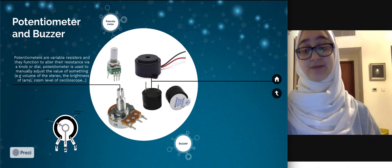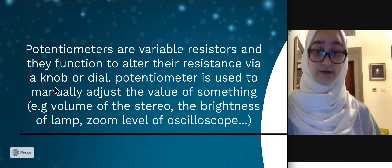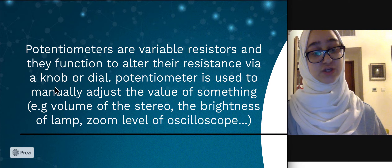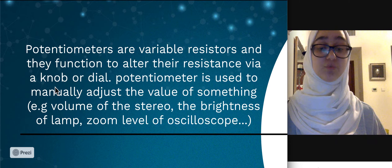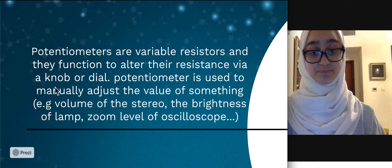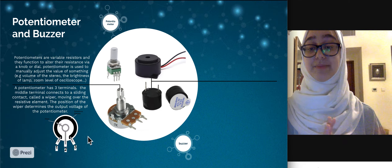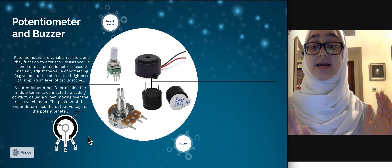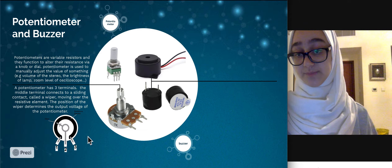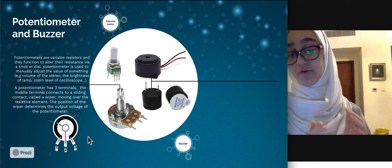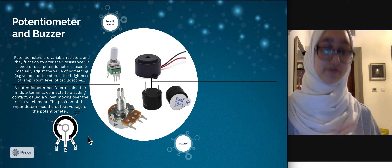A potentiometer is a variable resistor and it functions to alter the resistance by using a knob or a dial. It is basically used to adjust the value of something such as the volume, the brightness of a light, or the zoom level of an oscilloscope. A potentiometer has three terminals, and the middle terminal connects to a sliding contact, also known as the wiper, which moves over the resistive element. The position of the wiper determines the output voltage of the potentiometer.